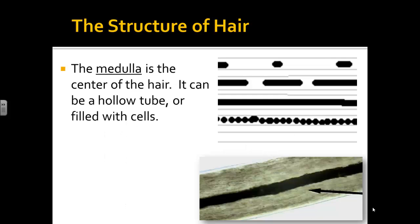The medulla is the center of the hair, like the lead in a wooden pencil. It is a tube down the middle of the hair. It can be filled with dark cells in different patterns, or it may not have anything in it, which means it looks like it doesn't even exist — but it is there. There are some examples and we will look at more under the microscope.